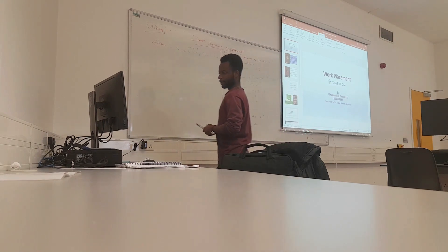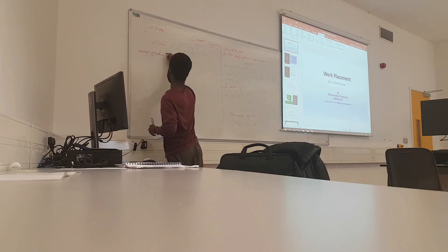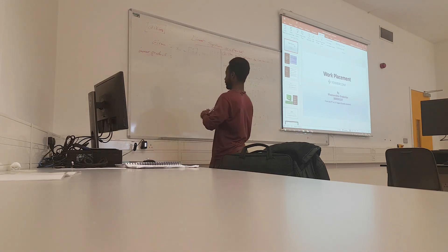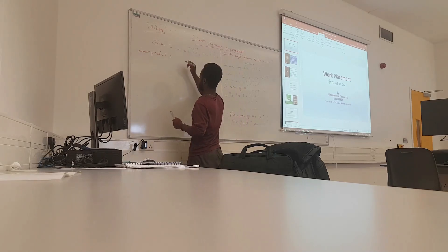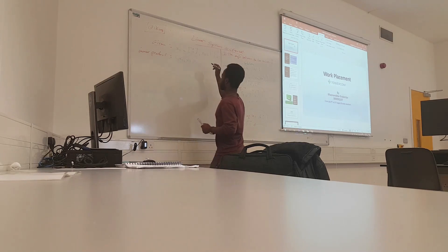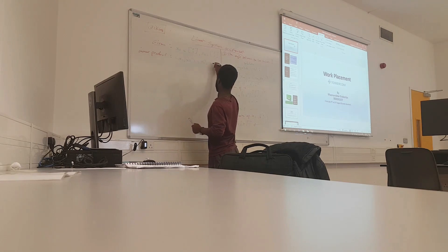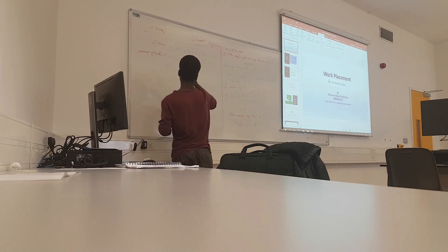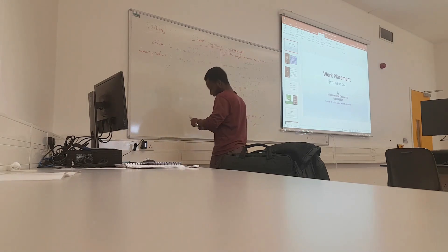Now we are asked to find the inner product of these two vectors. The inner product formula is that the inner product of x1 and x2 is the transpose of x1 multiplied by x2. Which means we are going to transpose x1, not x2.